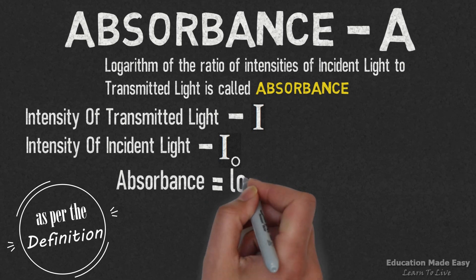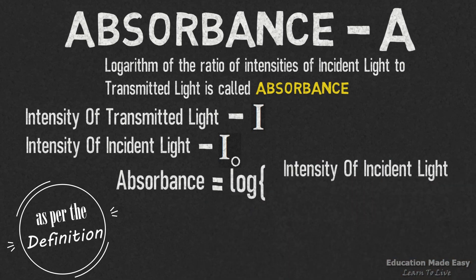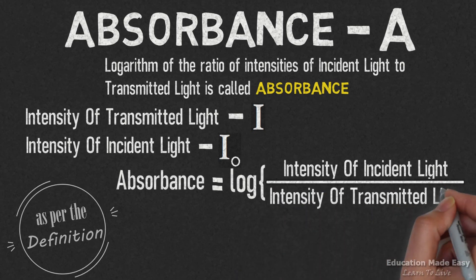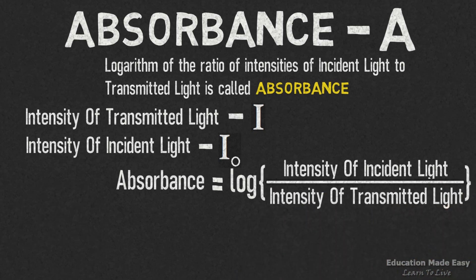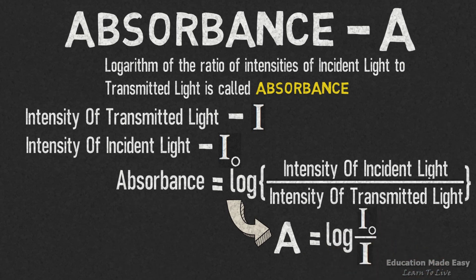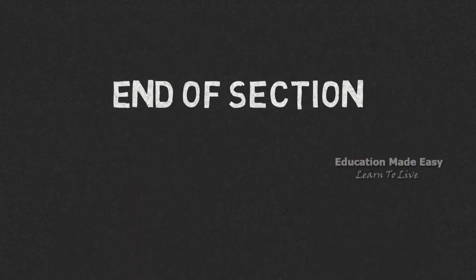So as per the definition, we can write: absorbance is equal to log of intensity of incident light divided by intensity of transmitted light. So the formula of absorbance will be A is equal to log of I₀ divided by I.